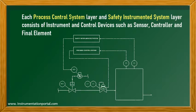Process control system, or PCS, and safety instrumented system, or SIS, consist of sensors, controllers, and final elements. It should be noted that the safety instrumented system and basic process control system must be fully separated, from the sensor up to the final element.